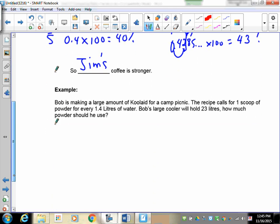Okay, Bob's making a large amount of Kool-aid for a camp picnic. The recipe calls for one scoop of powder for every 1.4 liters of water. Bob's cooler will hold 23 liters. How much powder should he use? Now this is a ratio with an unknown amount in it. So what you want to do is put down the ratio that you know. This is not a concentration question, this is a different type of a question.